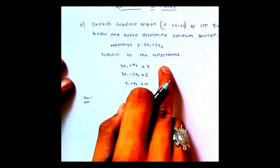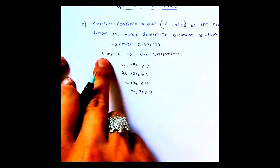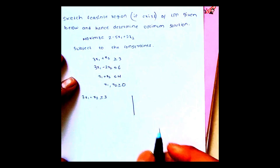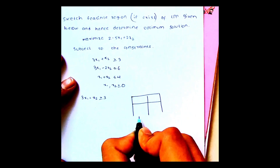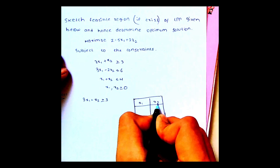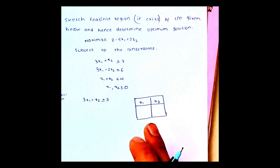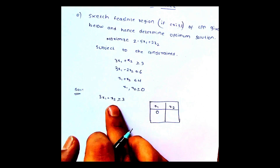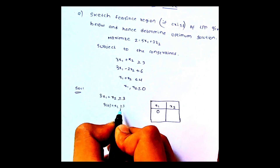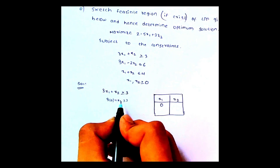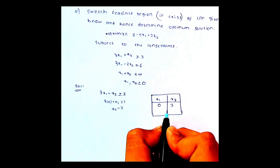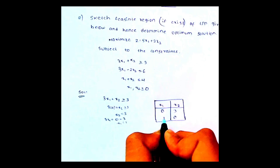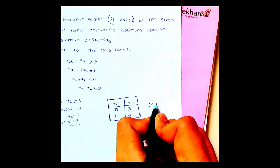What is the first equation here? We have to check the constraints. The first equation is 3x1 plus x2 greater than or equal to 3. I am explaining in an easy way so you can understand. I have taken two points, x1 and x2. If x1 is 0, then 3 into 0 plus x2 equals 3, so x2 equals 3. If x2 is 0, then 3x1 equals 3, so x1 equals 1. We find two points: (0, 3) and (1, 0).